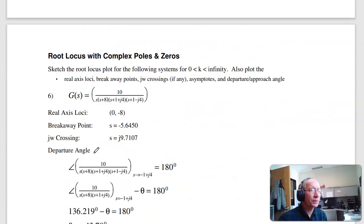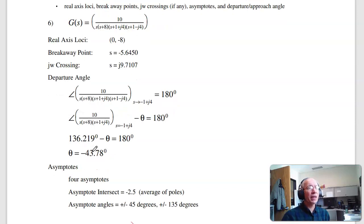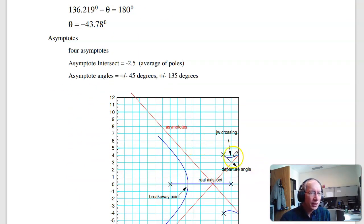Problem 6. If I have complex poles, same idea but I have a departure angle. Any point on the root locus, the angles have to add up to 180. So to find the departure angle, take this guy right here, evaluate it at a point plus epsilon. All these angles I can calculate. The one I can't calculate is this one. That angle is whatever it takes to make the total add up to 180.